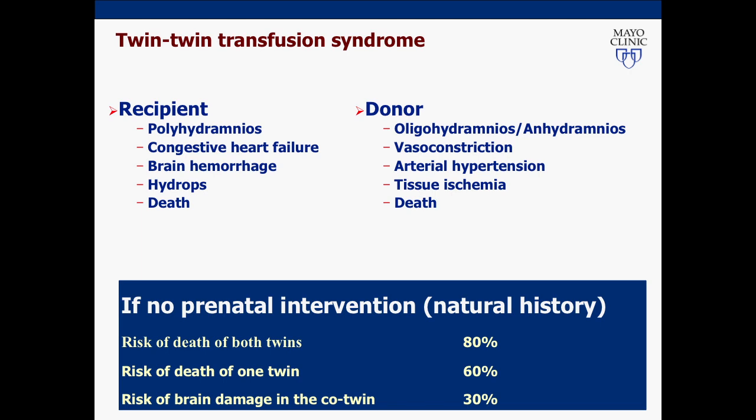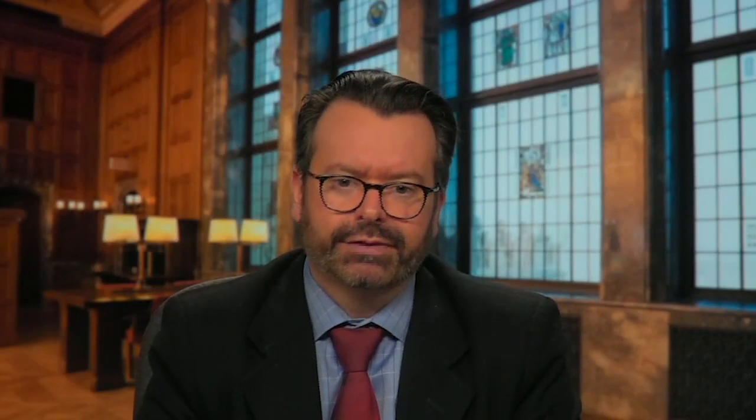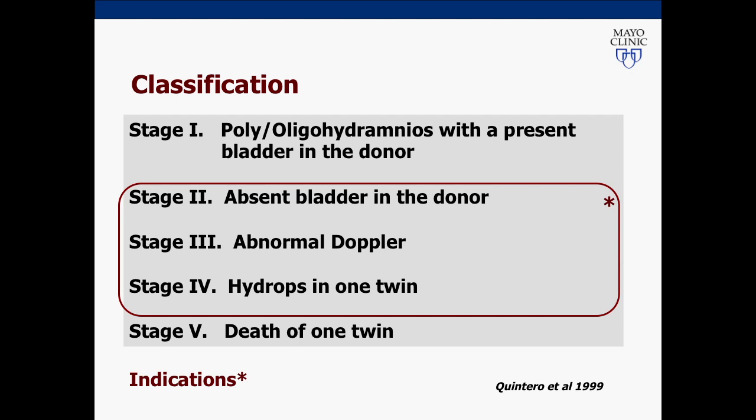Twin-to-twin transfusion syndrome is a severe situation with risk of pregnancy loss in approximately 80% if no prenatal treatment is performed. There are different stages of the disease: stage 1 when we have polyhydramnios and oligohydramnios with a present bladder in the donor; stage 2 when we have absent bladder in the donor; stage 3 abnormal Doppler studies; stage 4 hydrops in one of the twins; and stage 5 when we have death of one twin.